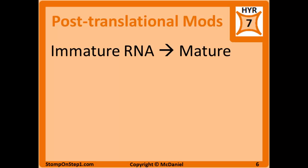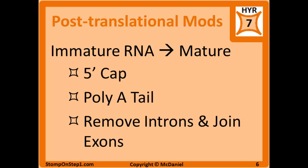Post-translational modifications, or just RNA processing, is the process of converting immature RNA into mature RNA. You're going to have a 5' cap of a modified guanine added to the end of the RNA to help ribosomes recognize the RNA. You're also going to have a poly-A tail added to the 3' end — a sequence of AAUAAA that is added without following any complementary DNA sequence — and this extra tail helps prevent degradation of the RNA.